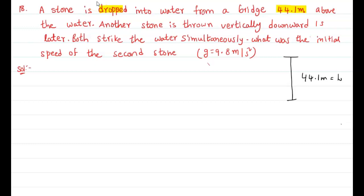Another stone is thrown vertically downwards one second later. The first stone is dropped simply, taking time t1 to reach the ground. The second stone is dropped after, taking time t2 to reach.